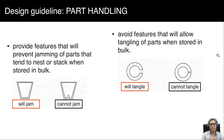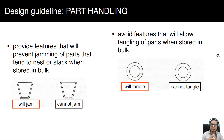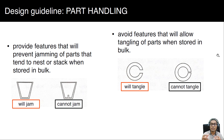Also, provide features that will prevent jamming of parts that tend to nest or stack when stored in bulk. If you design a part with certain shapes, it will jam, while another design cannot jam. Additionally, avoid features that will allow tangling of parts when stored in bulk — the figure with the red box shows a design that will tangle, while the other will not.